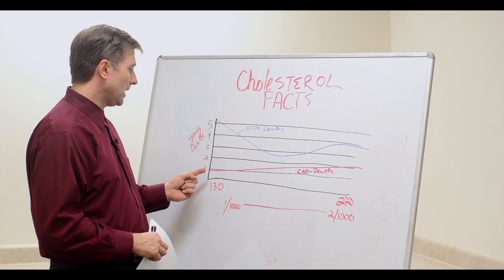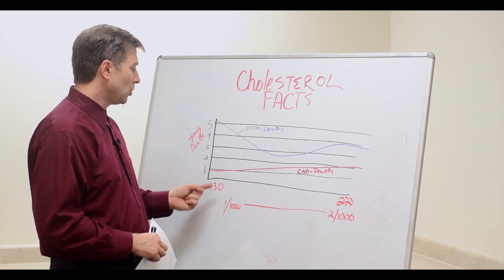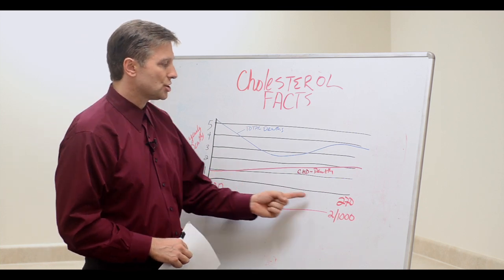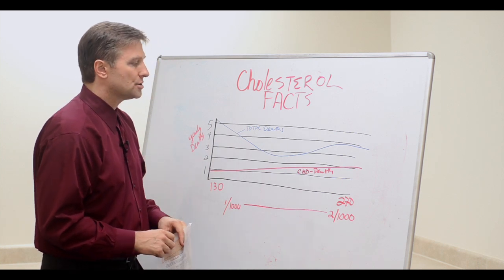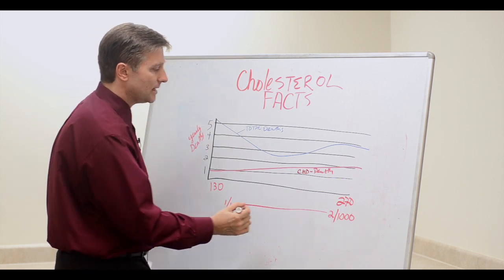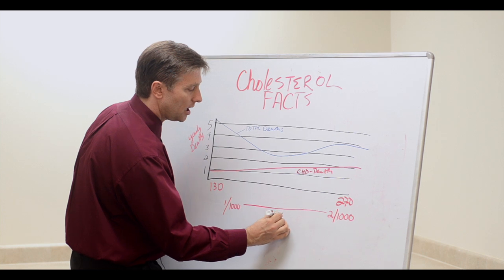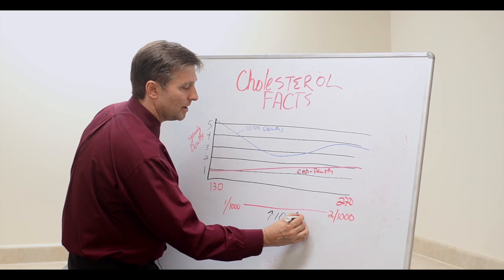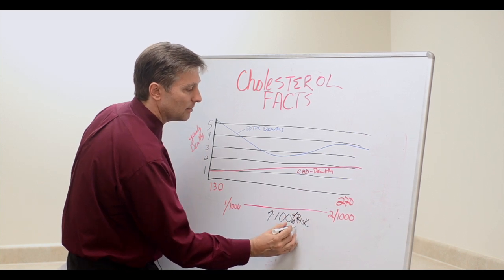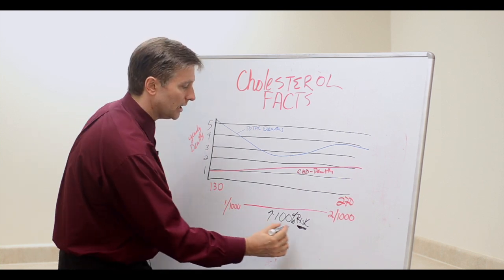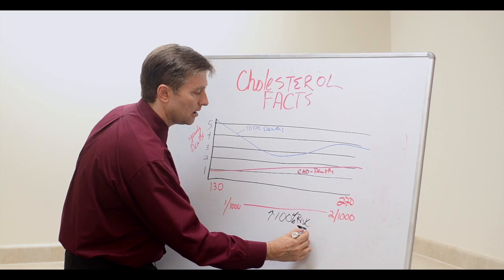So this is what happens. If you look at the deaths with low cholesterol, it's one out of a 1,000 at 130, and it's two out of 1,000 at 270. So this is what they did. They said that's an increase of 100% risk. But notice what they said. They use the word risk, but not rate of getting heart attacks.